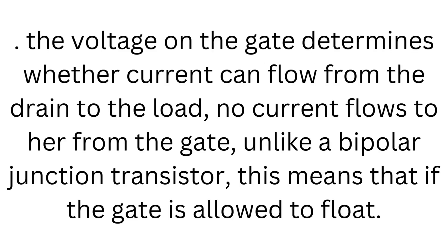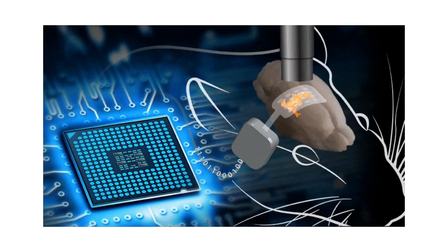The voltage on the gate determines whether current can flow from the drain to the load. No current flows to or from the gate, unlike a bipolar junction transistor. This means that if the gate is allowed to float, the FET may turn on or off in response to ambient electrical fields or very tiny currents.